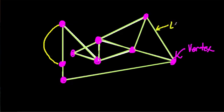So in graph theory, the two basic components are edges and vertices. So what is a vertex, and what is an edge?